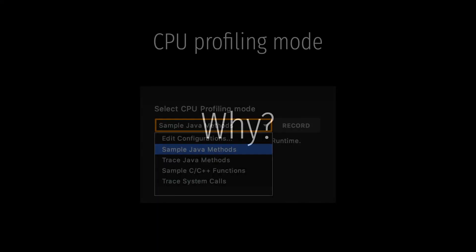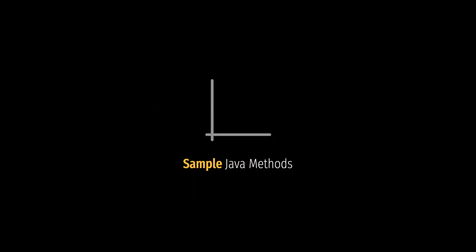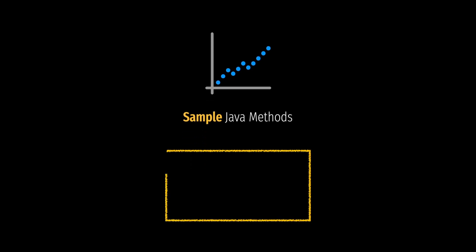Why does it happen? The first reason that might come to mind is the CPU profiling mode that we chose. In sample Java method mode, Profiler captures the app call stack at some interval. This interval is very frequent, but it can add some error to our measurements. We can even miss some shorter method calls because of that.